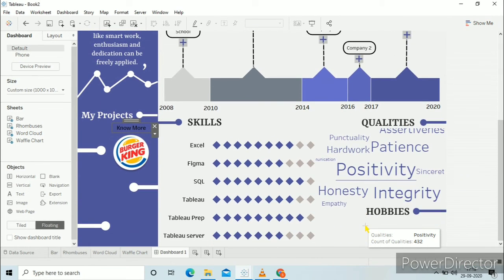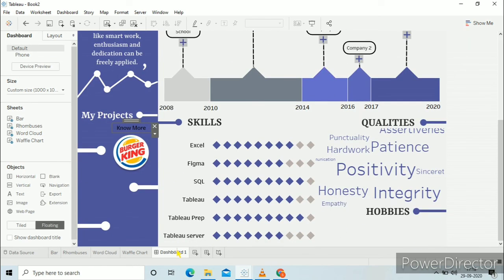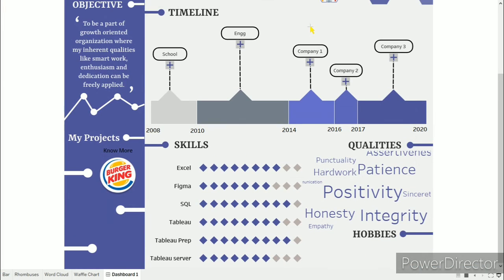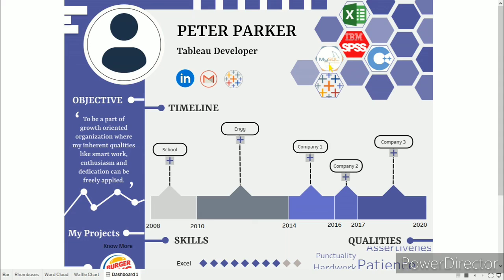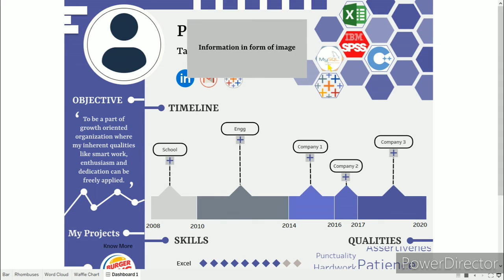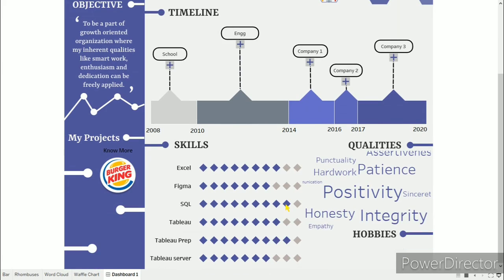In the hobbies section, you can do whatever you want. If you like swimming and playing, you can do that on your own and just impress your recruiter. I am planning to create two or three more resumes that you can select whatever you want to do and apply it in your own interactive resume.